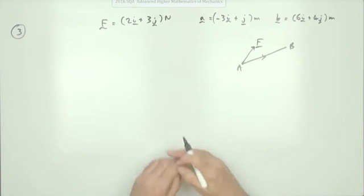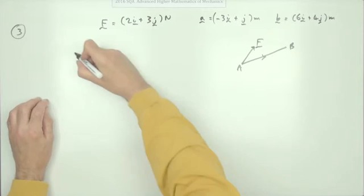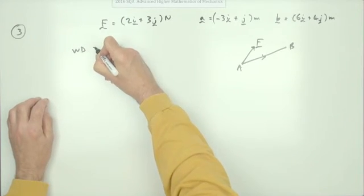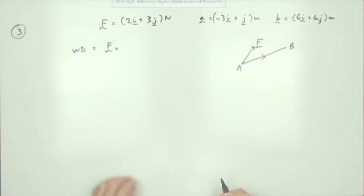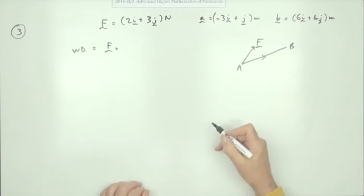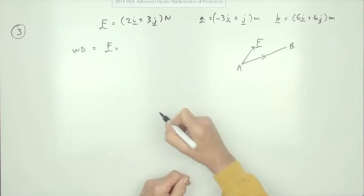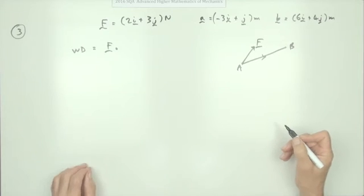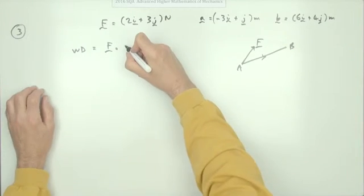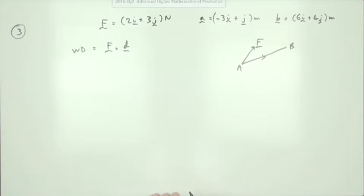Work done is force times distance in one dimension. In two dimensions, the work done will be the scalar product of the force and the displacement — however we wish to call the displacement: R, S, or D. In the marking scheme they've gone for D, so I'll just use D as a vector for the displacement.